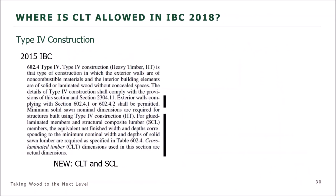In the 2015 IBC, CLT was first adopted under heavy timber construction. We incorporate cross-laminated timber in heavy timber construction, and also structural composite lumber. Heavy timber construction — Type 4 — is that type of construction with exterior walls of non-combustible materials and interior of solid or laminated wood without concealed spaces. The heavy timber members have large cross-sections and achieve slow-burning characteristics that made it common back in the 1800s in heavy industrial areas such as the Northeast.